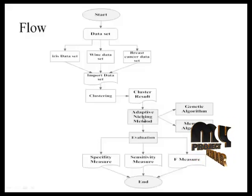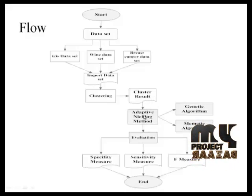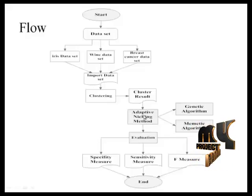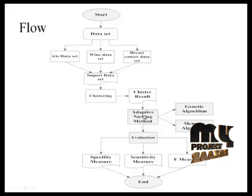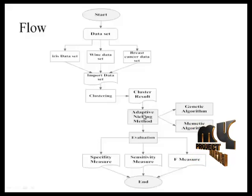Next, we apply the adaptive niching method to the clustered records. There are two algorithms in the adaptive niching method: genetic algorithm and mimetic algorithm. In the genetic algorithm, we assign and initialize the population. Based on the population value, we obtain the mutation and crossover values. We initialize the randomized value and exponent value to get the chromosome value. Finally, the generation result is obtained based on population, mutation, crossover, randomized value, chromosome, and exponent value.